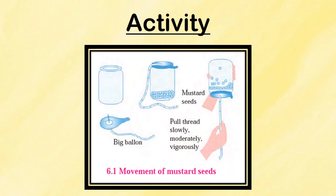Now let's do one activity. Take some mustard seeds in a transparent plastic jar. Thread a long thread at the center of a big balloon by means of a needle and tie it tight. Stretch this rubber diaphragm and fix it on the mouth of the jar by means of a rubber band. Pull the diaphragm up and down with the help of the thread, first slowly, then with moderate speed, and then vigorously. Record your observations.